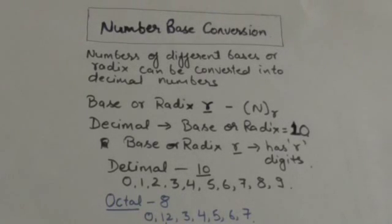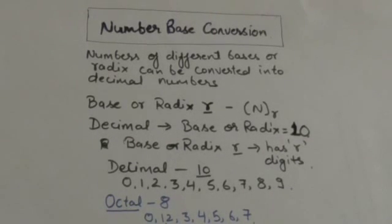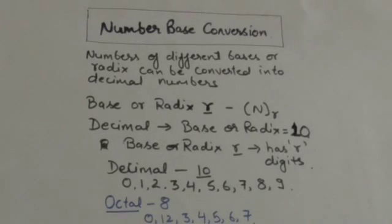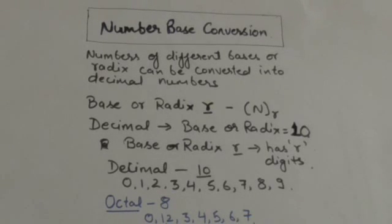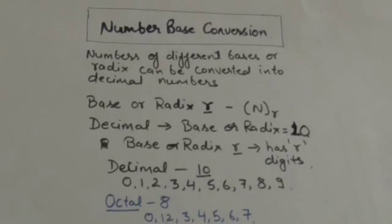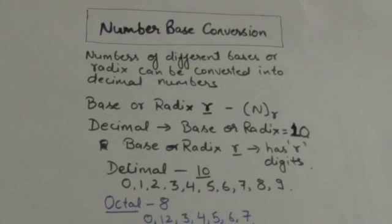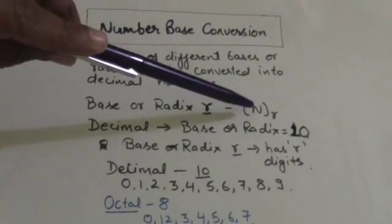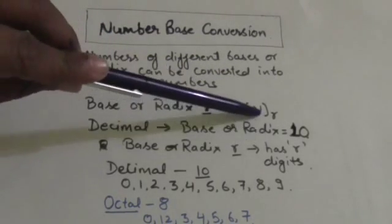Hello friends, welcome back to tutorials. In this tutorial we will study how we can convert the numbers of different bases or radix into decimal numbers. To differentiate between numbers of different bases, we enclose the numbers in parentheses and write a subscript equal to the base of that number. Suppose there is a number N whose base or radix is r — we write that number enclosed in parentheses with subscript r.